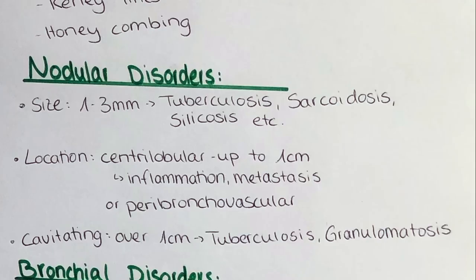Nodular diseases can be differentiated by their size and location. If the size is between one and three millimeters, we say it's miliary — that's for example tuberculosis, sarcoidosis, silicosis, and many more. The location can be for example centrilobular or peribronchovascular, and if the nodule is up to one centimeter it can usually indicate inflammation or metastasis.